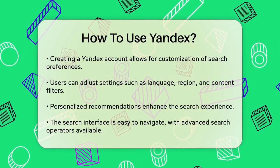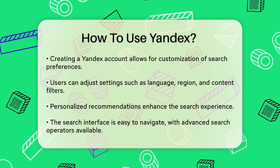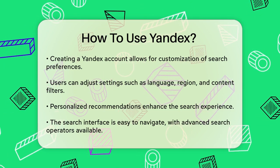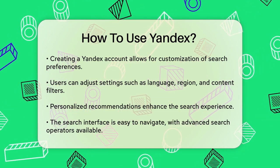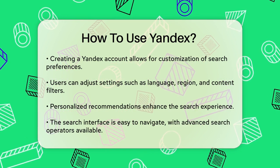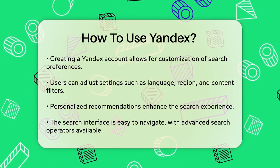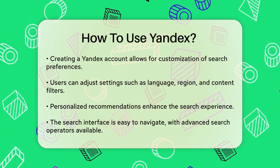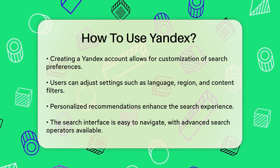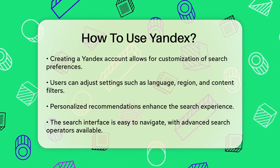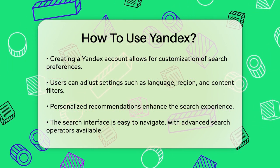For example, using quotes for exact phrases or the minus sign to exclude certain words can help you get more precise results. The site operator allows you to search within a specific domain, which is particularly useful for targeted searches.